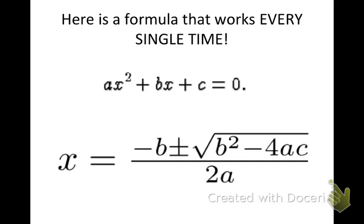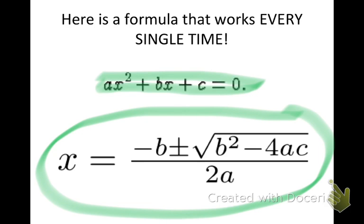If we have an equation in the form ax squared plus bx equals c—I'm sorry, ax squared plus bx plus c equals zero—then we can use the quadratic formula, this big thing down here, in order to solve for our solutions for the quadratic.